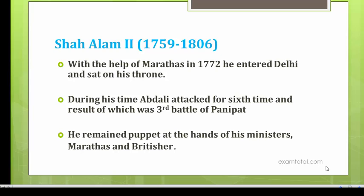Shah Alam entered Delhi with the aid of Marathas and sat on his throne for the first time in 1772. During his time, Abdali attacked for the sixth time. Like all later Mughals, Shah Alam was just a puppet — at the hands of his own ministers, the Marathas, and the increasingly influential Britishers. He remained a puppet, following their advice.